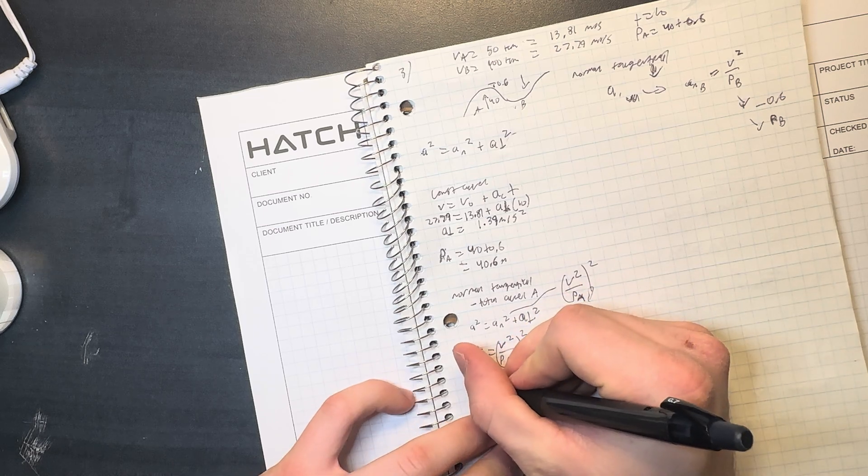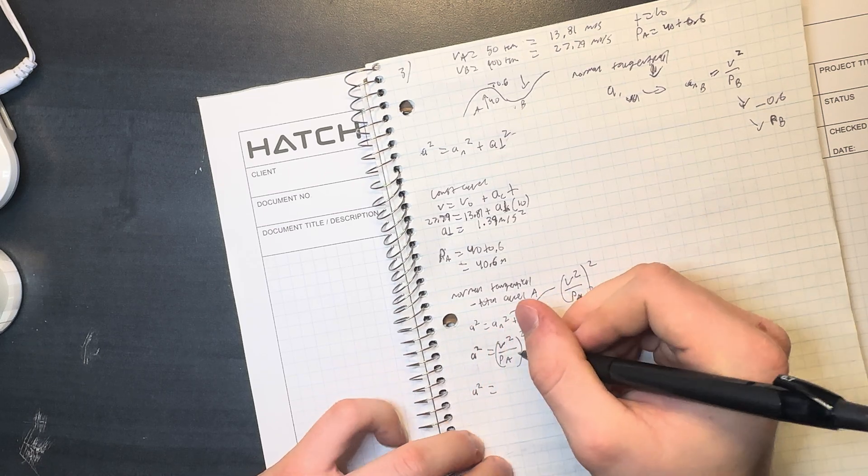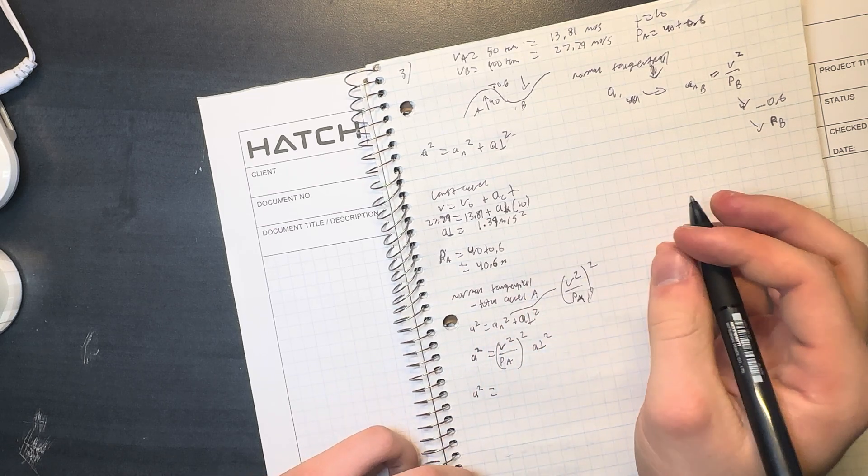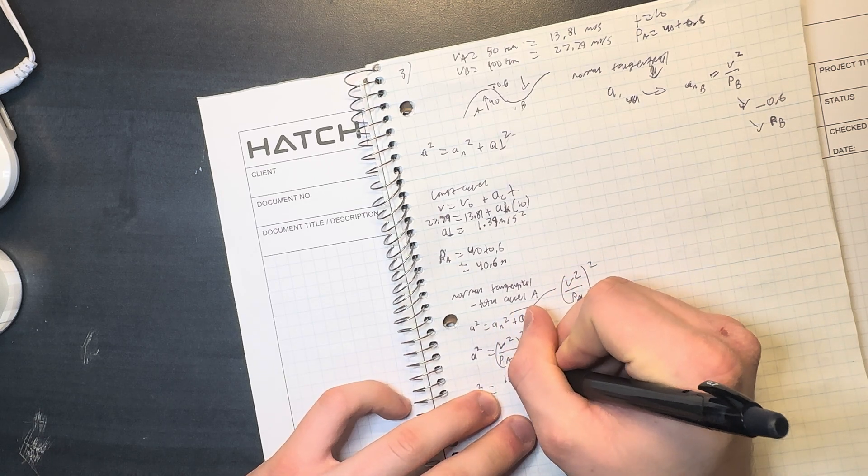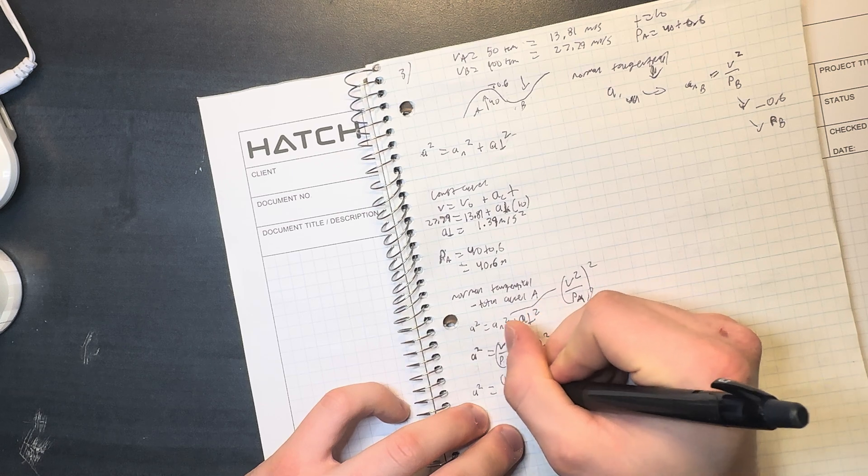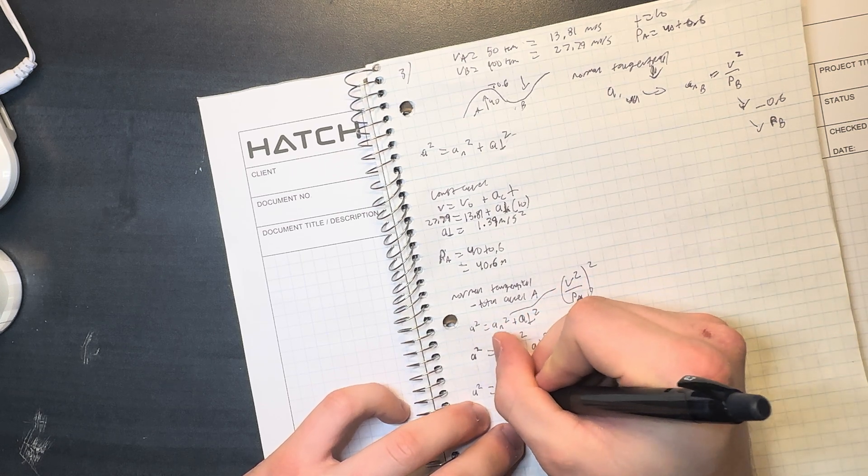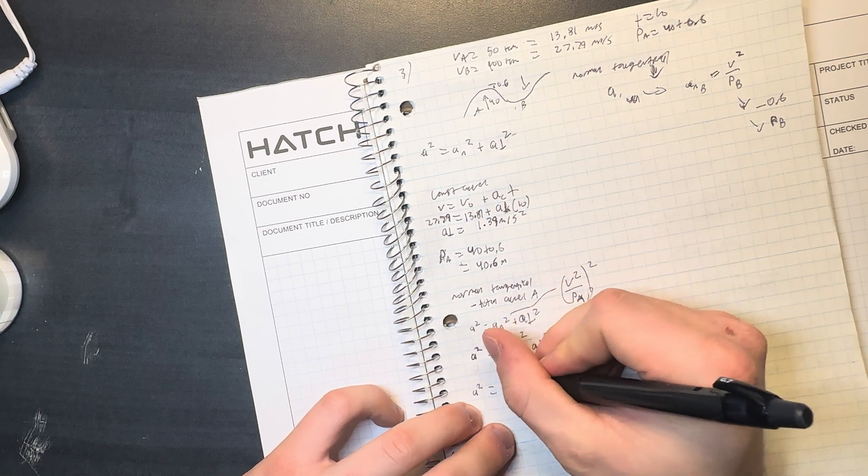Okay, so a squared is equal to velocity of A is 13.81 squared over 40.6, whole squared.